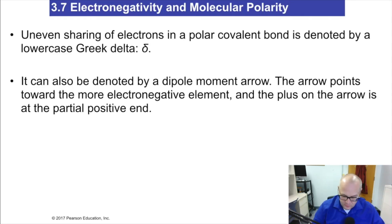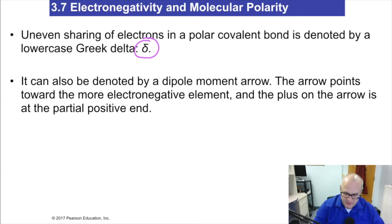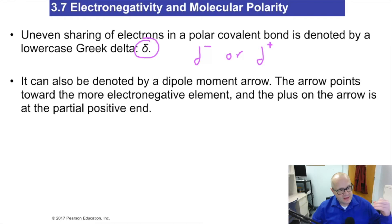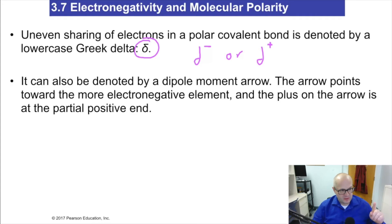In chemistry, we use the Greek letter delta to indicate an uneven sharing of electrons — a partial negative or a partial positive. Delta-negative or delta-positive means an atom has a slight negative or a small positive, not a true cation or true anion, but a little bit positive and a little bit negative.